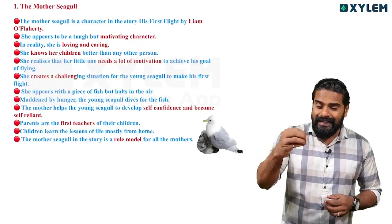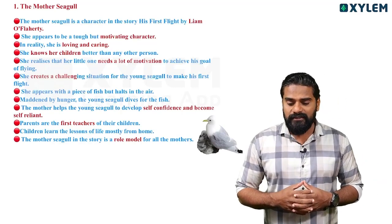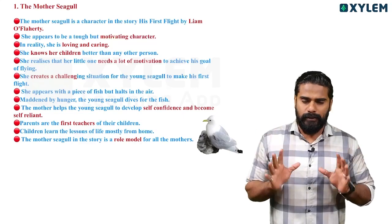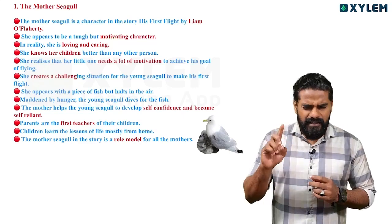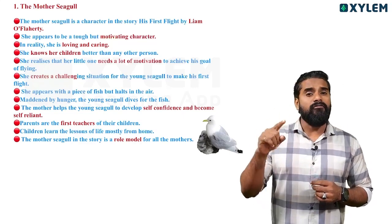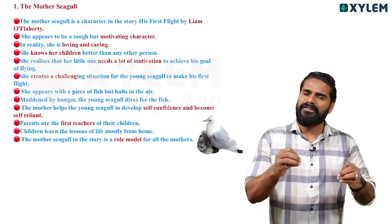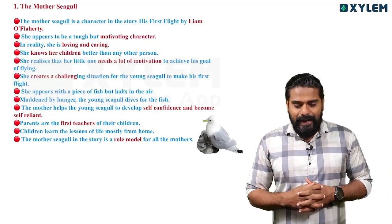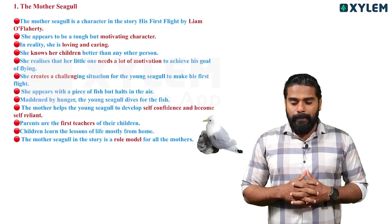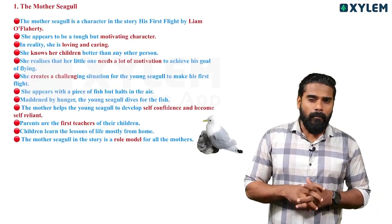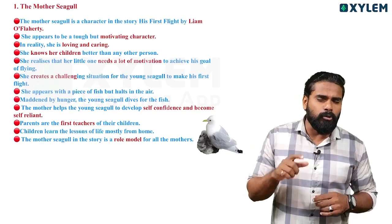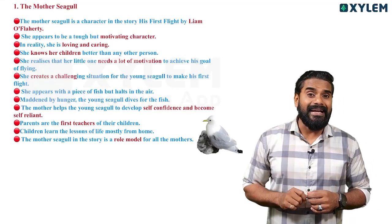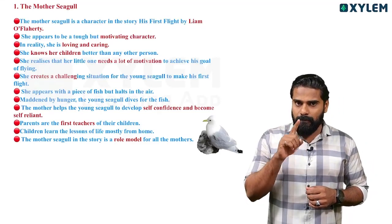Mother Seagull is a character in the story 'His First Flight' by Liam O'Flaherty. She appears to be a tough but motivating character. She is one of the tough characters, but she is a motivating character — that is Mother Seagull.